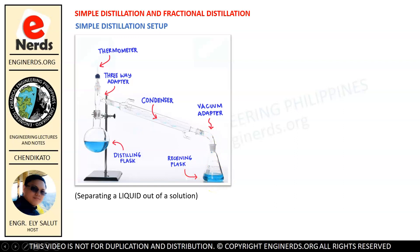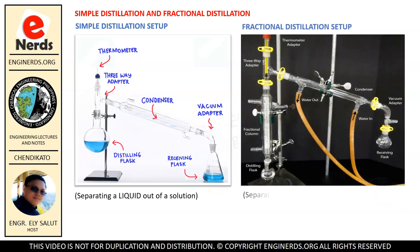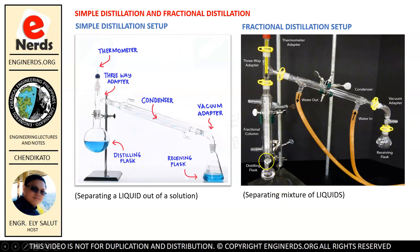Now let me show you the setup for a fractional distillation. Here in fractional distillation, we are separating a mixture of liquids — that means we are separating more than one particular liquid in our solution. But have a look at this setup. As you can see, this is basically the same as the simple distillation setup. We have the distilling flask, a three-way adapter, a thermometer, our condenser, a vacuum adapter, and a receiving flask.